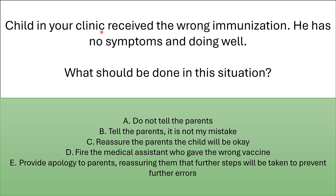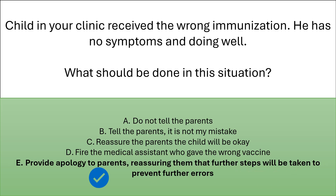A child in your clinic received the wrong immunization. He has no symptoms and is doing well. What should be done? The answer is to provide an apology to the parents, reassuring them that further steps will be taken to prevent further errors. They will trust you more.